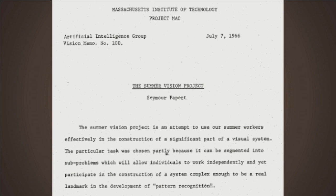It began in the summer of 1966, in MIT. At that time, the field of artificial intelligence was born — very nascent — but there was a lot of excitement. One professor at MIT decided that in one summer we're going to solve the problem of vision, because vision feels easy. You open your eyes, you see. He thought that with the powerful computers they had in the 1960s, this summer vision project would solve vision. That's what the charter says: 'The summer vision project is an attempt to use our summer workers effectively in the construction of a significant part of a visual system.'